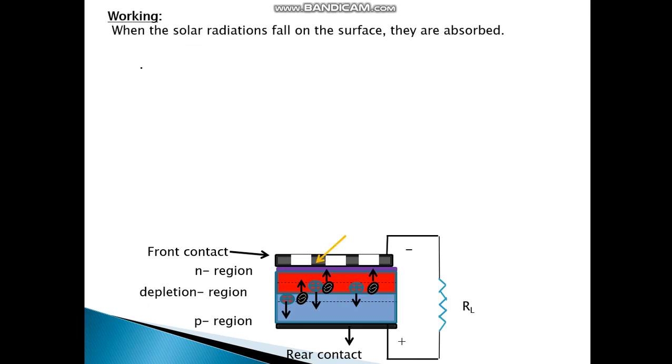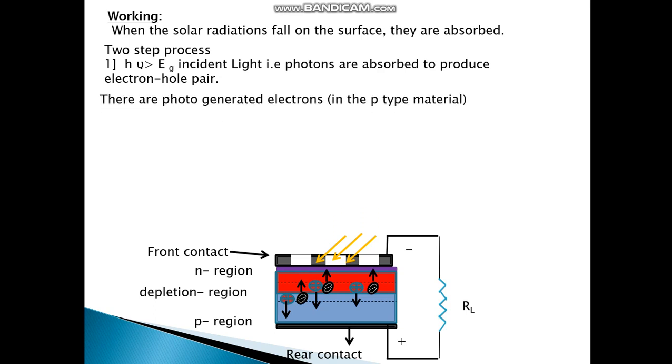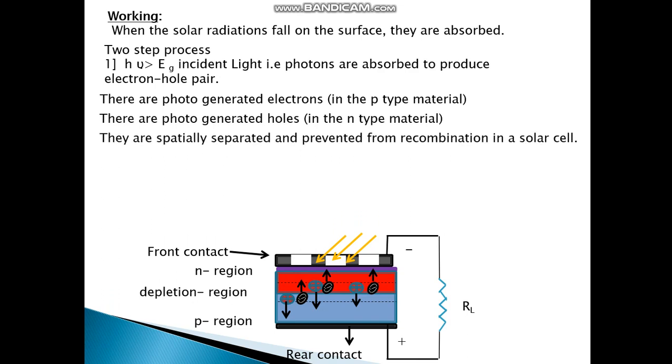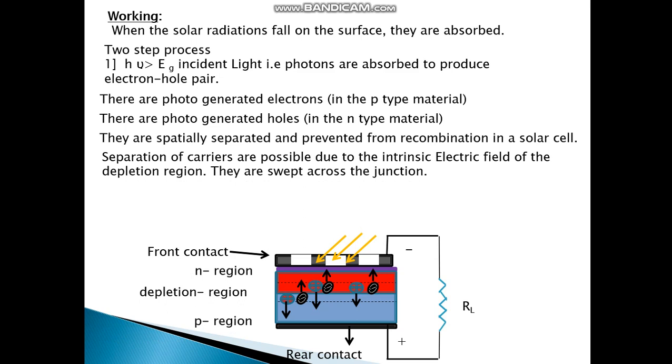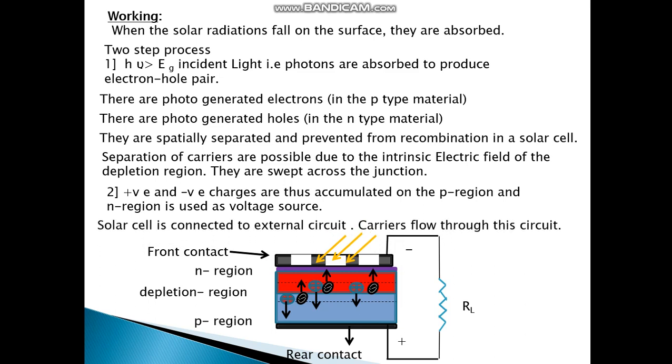When the solar radiations fall on the surface, they are absorbed. Two step process is when h nu is greater than Eg, that is the incident light. Photons are absorbed to produce electron hole pair. There are photogenerated electrons in the p material. There are photogenerated holes in the n-type material. They are spatially separated and prevented from recombination in a solar cell. Separation of carriers are possible due to the intrinsic electric field of the depletion region. They are swept across the junction. Positive and negative charges are thus accumulated on the p region and n region, which is used as a voltage source. Solar cell is connected to the external circuit. Carrier flows through this circuit.